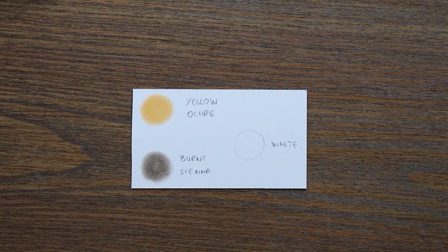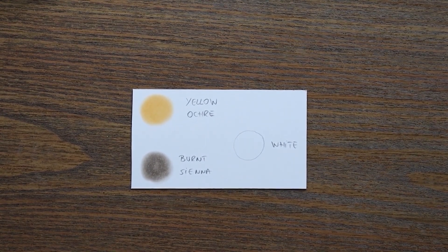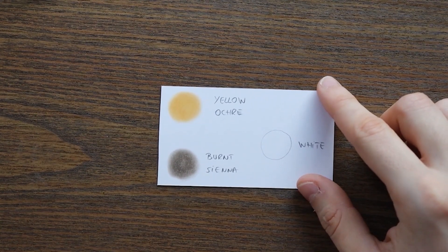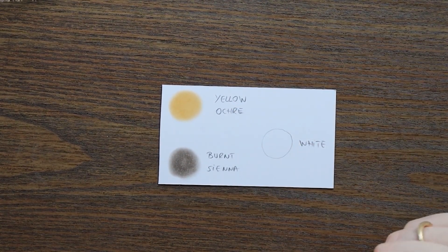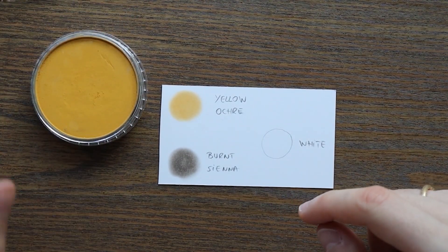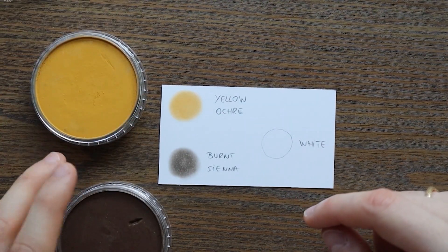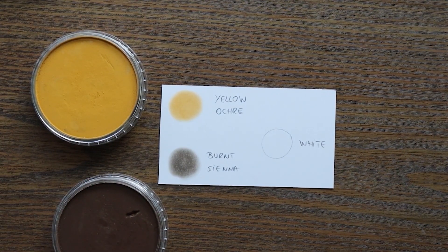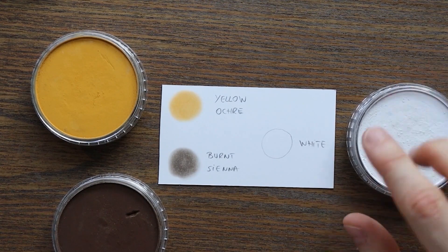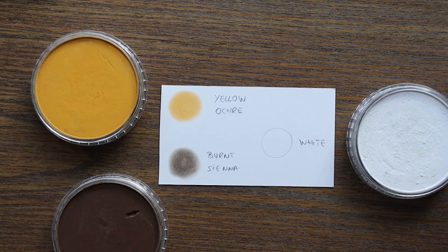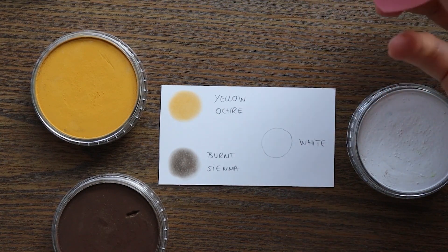For this background I'm going to use only three pan pastels and I made here some swatches to show you guys which ones I'm going to use. I'm going to start out with the yellow ochre which is this color, burnt sienna which is this color, and the white pan pastel which is this one. I'm going to use as well a blending sponge for makeup.